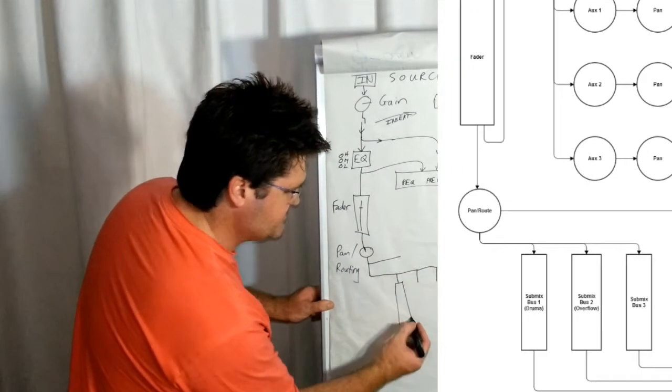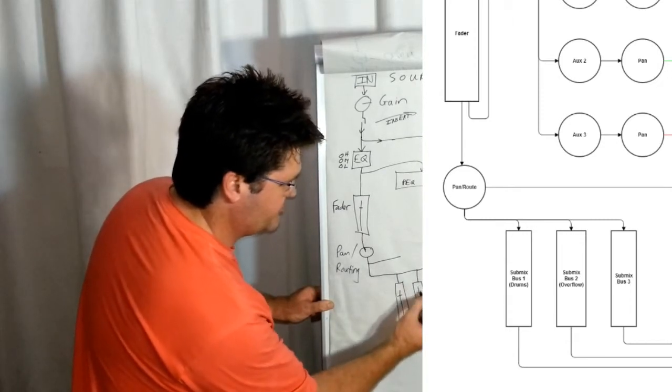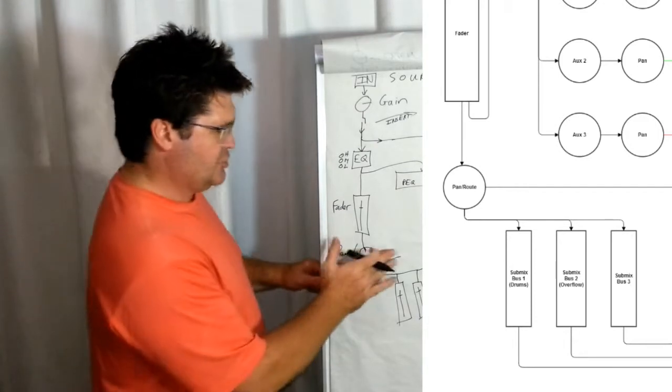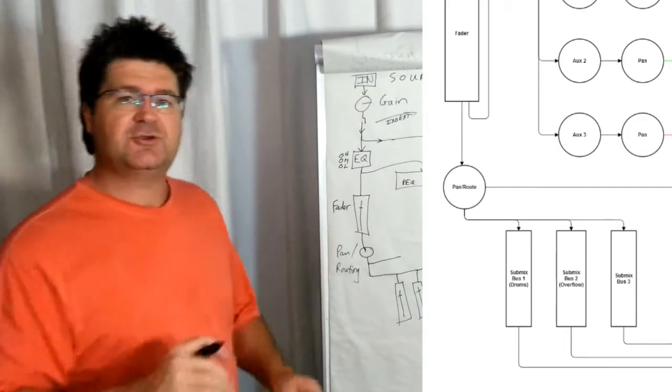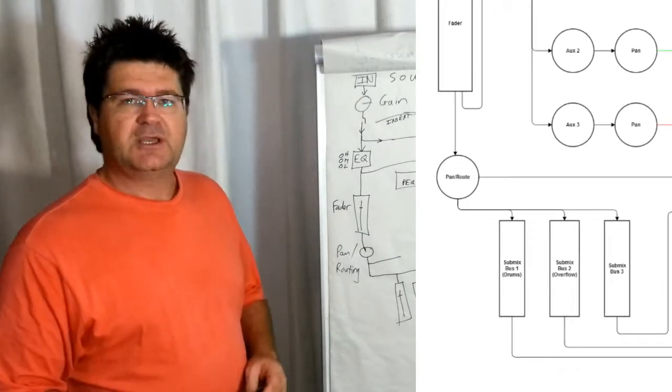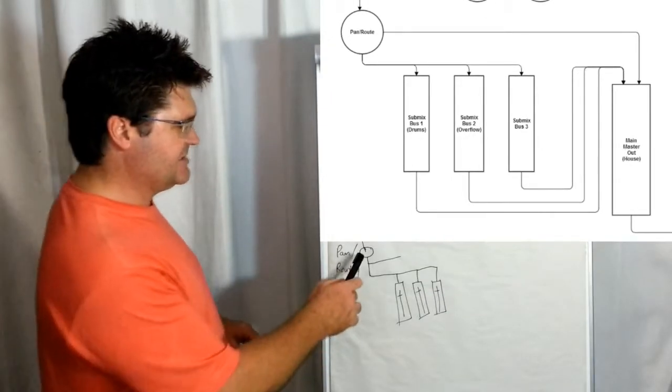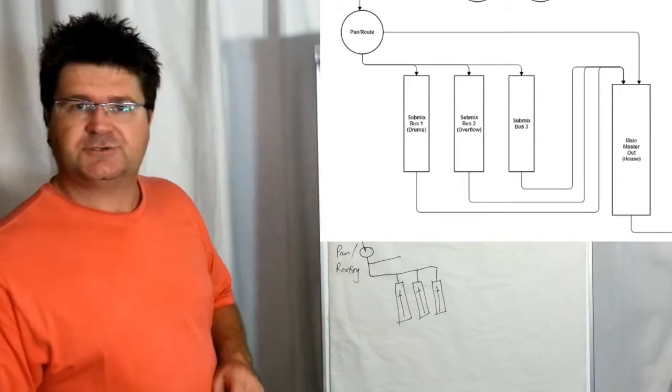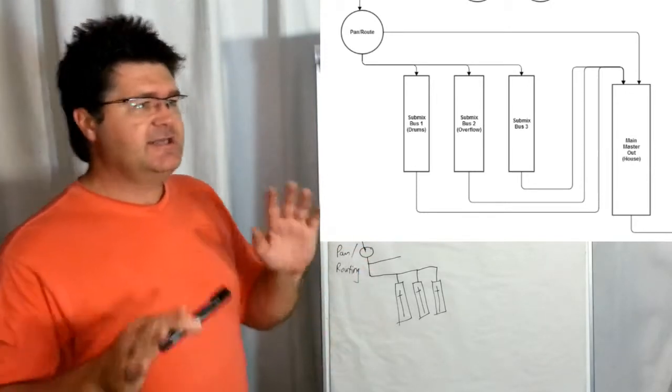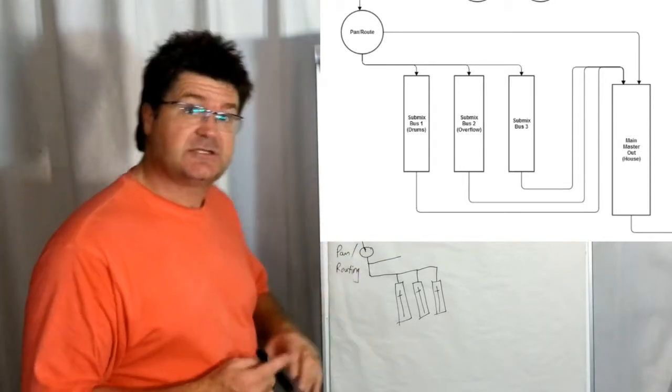depending on how many submix groups your desk has. In this case, I'm just drawing three as on the diagram, so it splits. You can make it not go here as well, depending on how you use your routing button. You can press the routing for one and two, in which case it'll go to one and two and nowhere else, or you can select to send it to one and two, as well as to master, or to one and two, and three and four, and master. Again, why? We'll get to how? By pressing that button. And this is how the signal then flows.